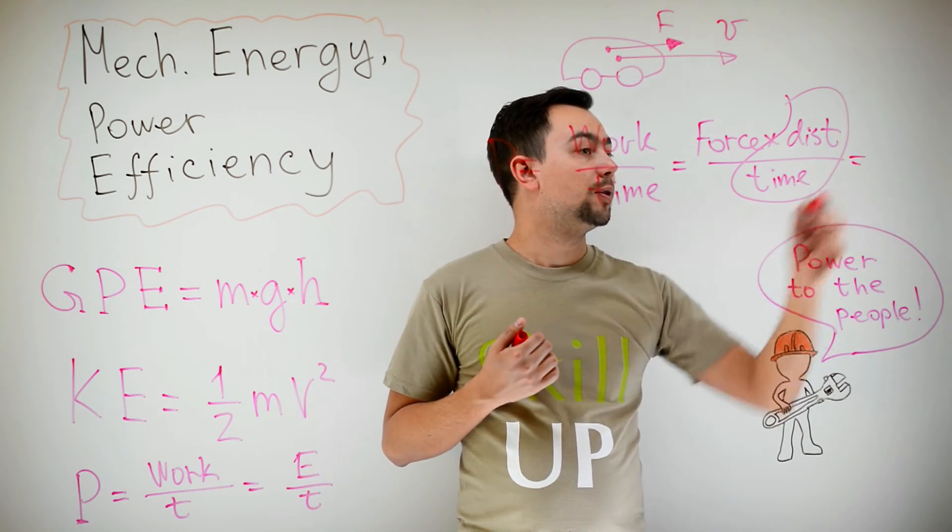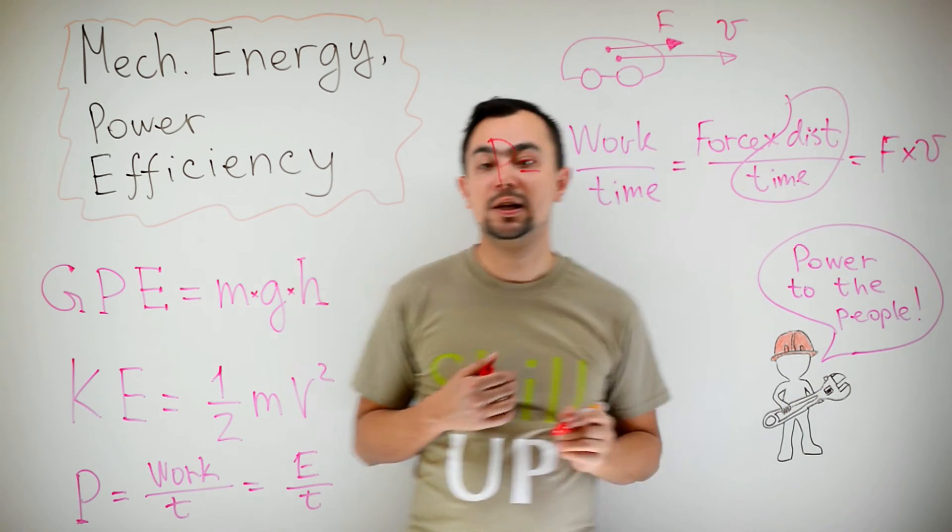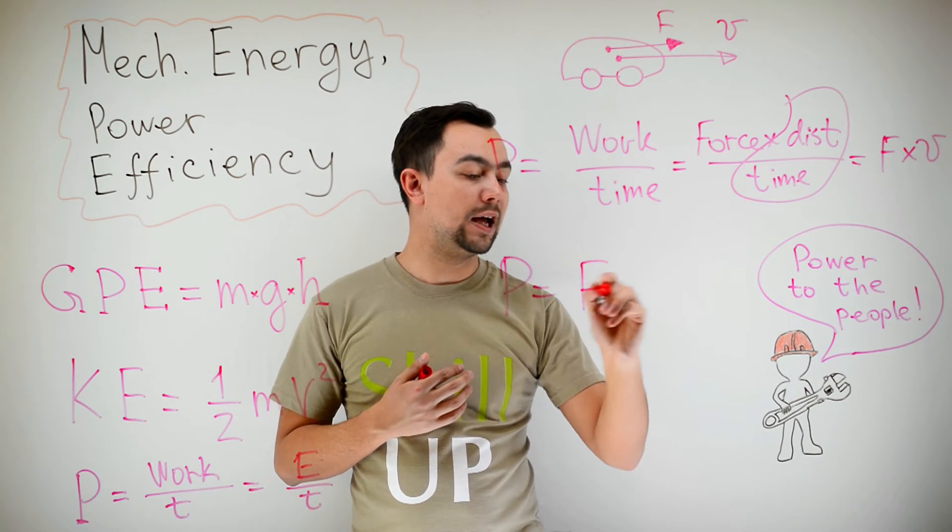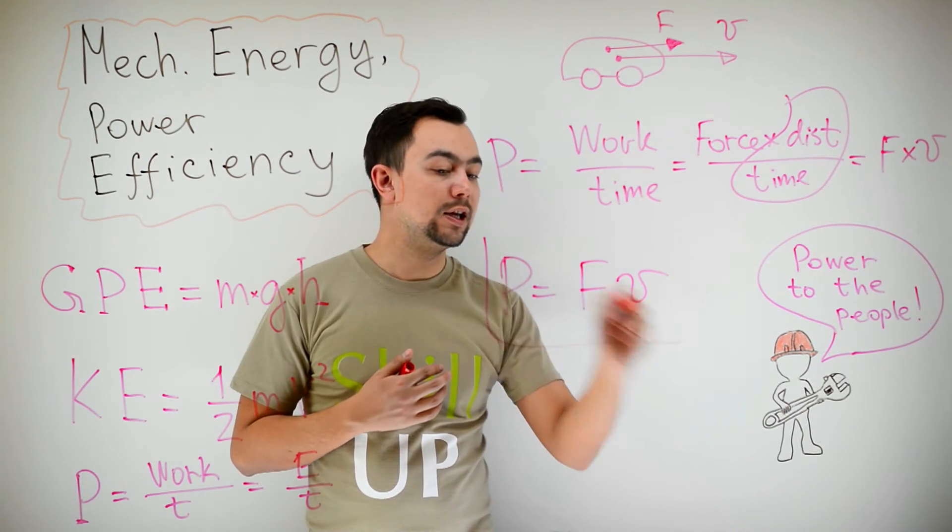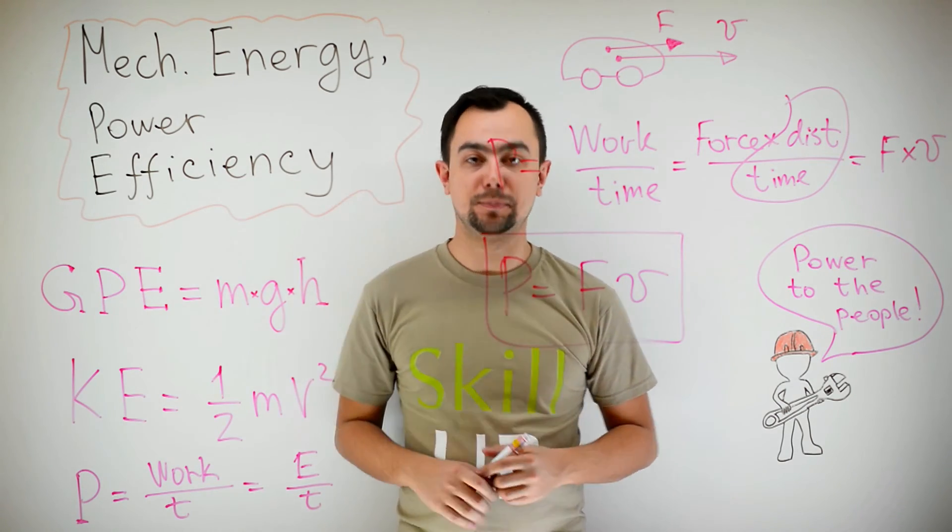So, force multiplied by speed. So, another formula for power: P is equal to FV, if the speed is constant and the force is constant. That's very important.